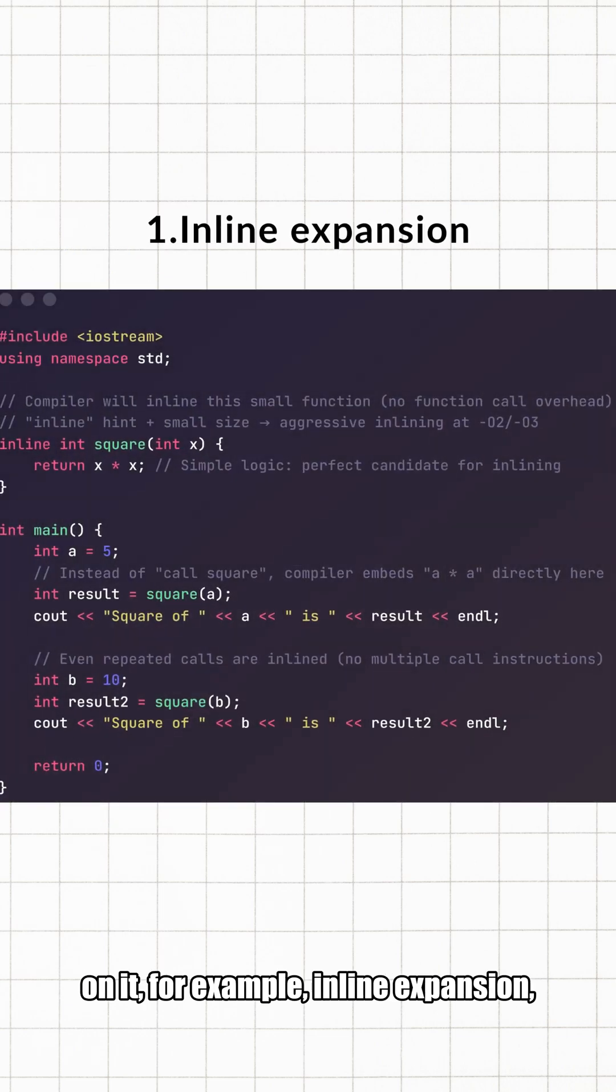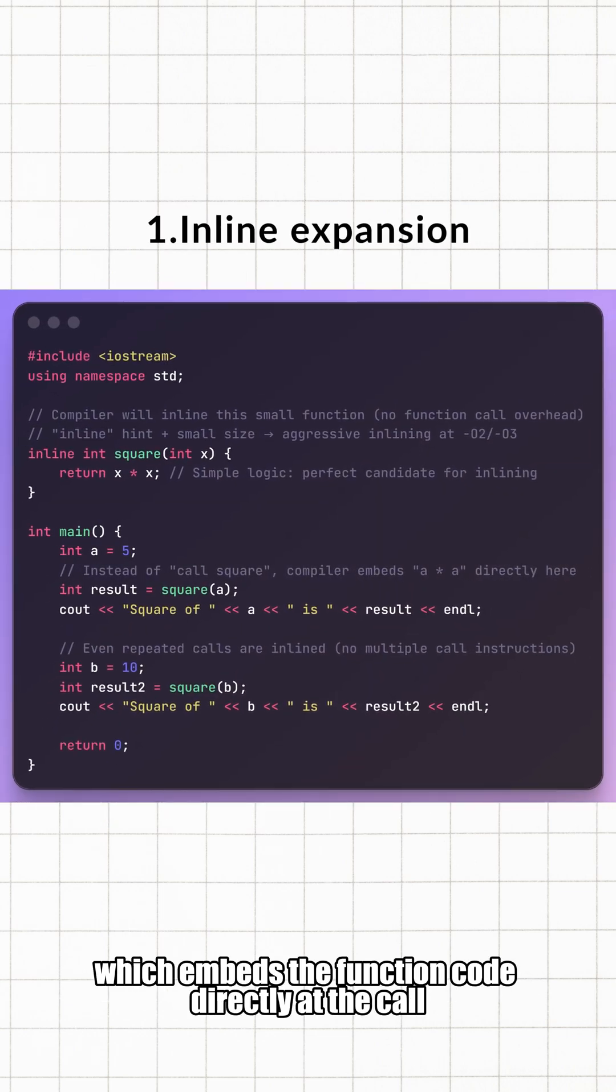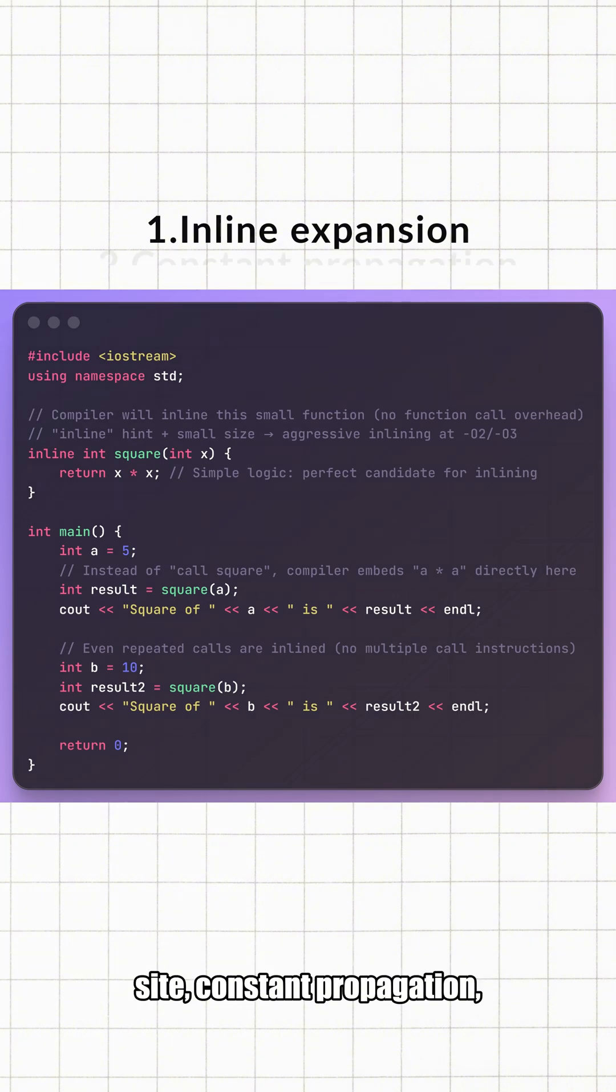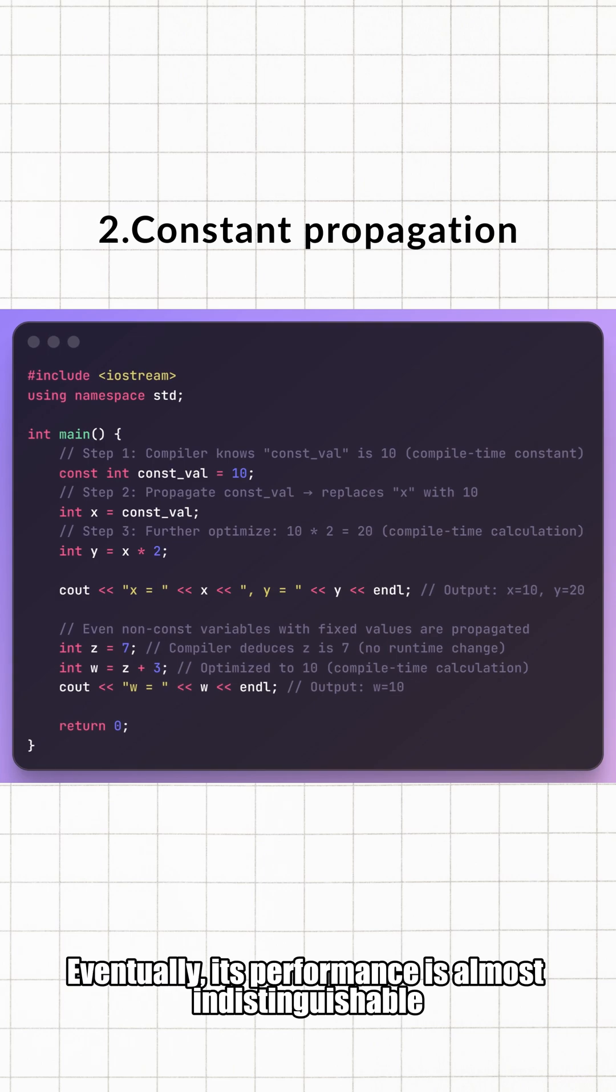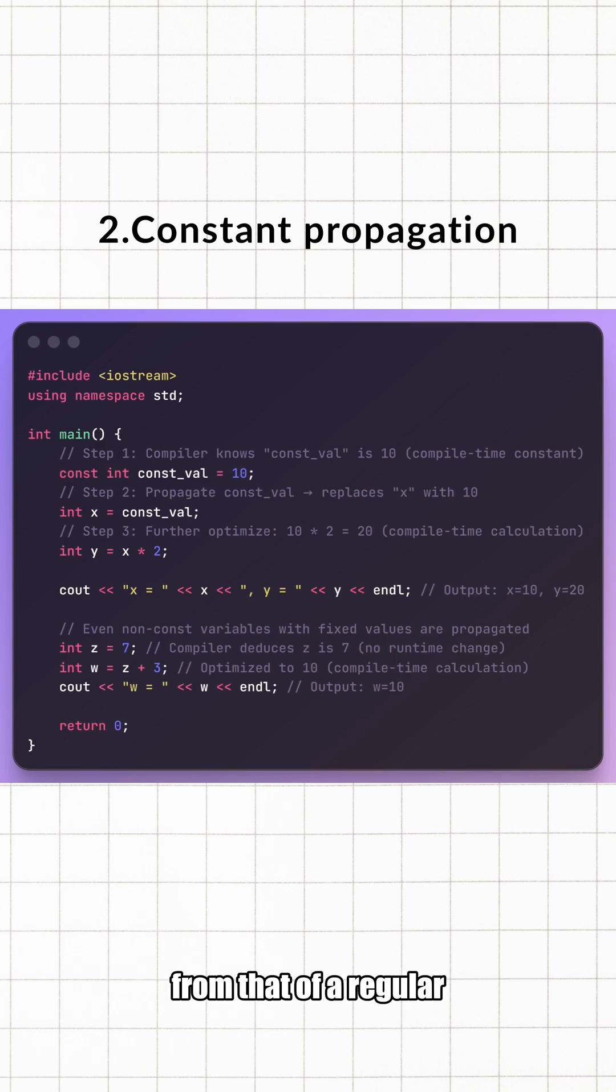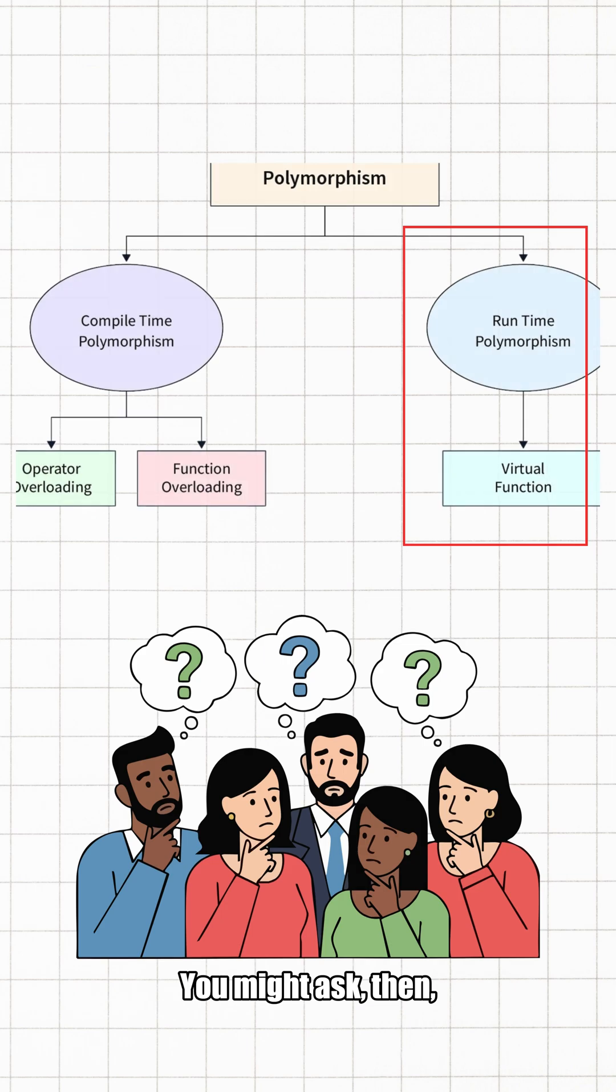For example: inline expansion, which embeds the function code directly at the call site; constant propagation; cross-function optimization; and even instruction reordering. Eventually, its performance is almost indistinguishable from that of a regular non-virtual function.